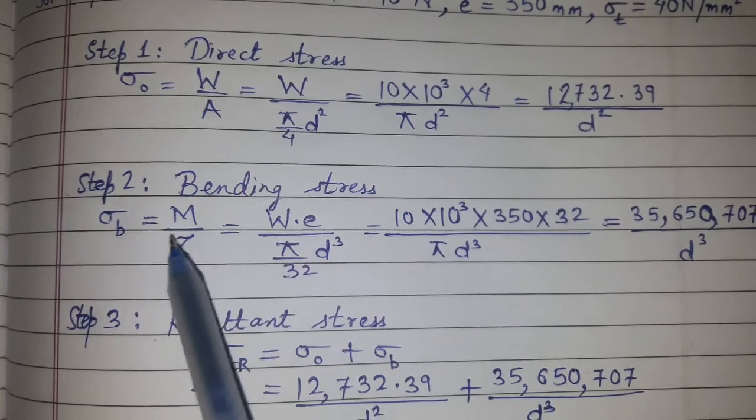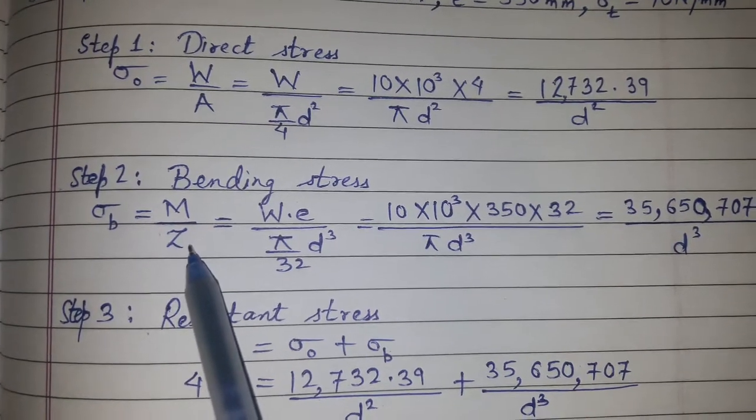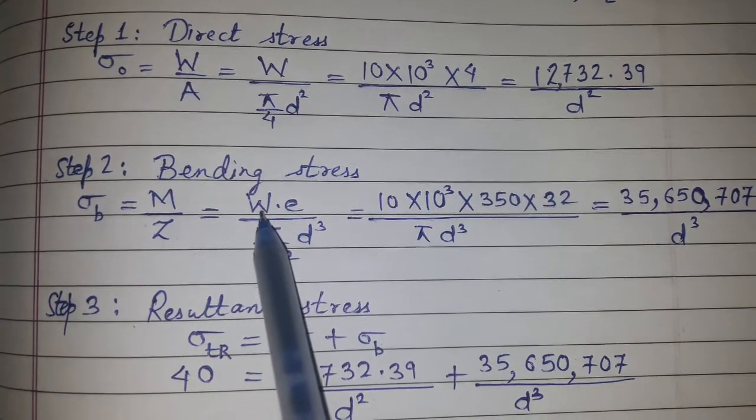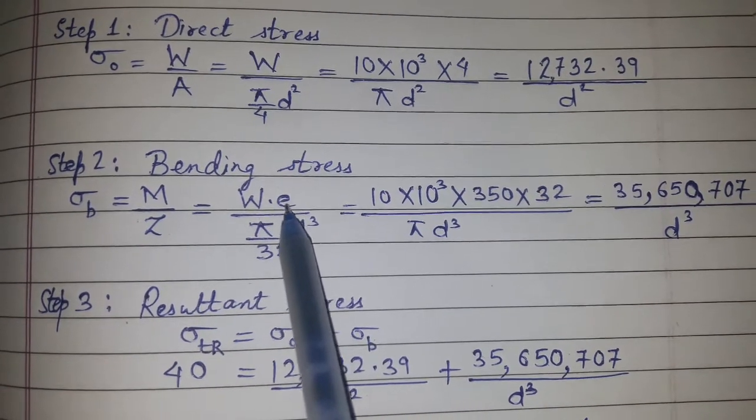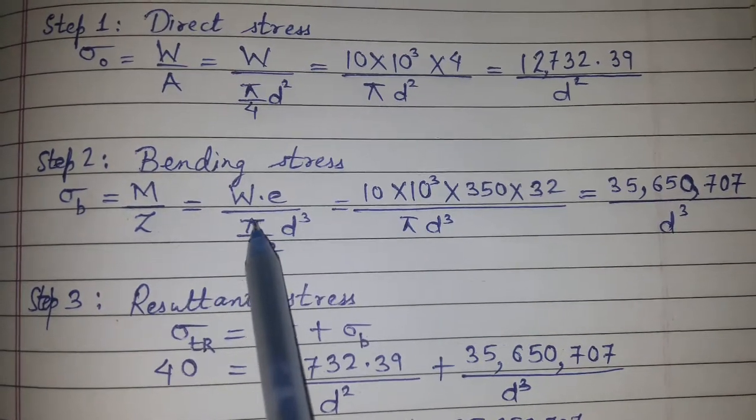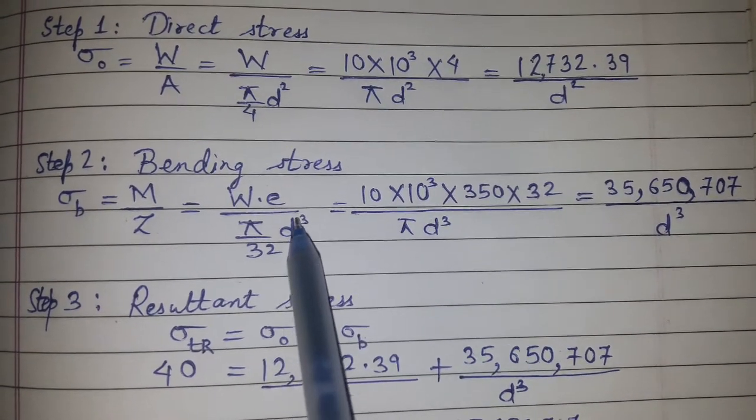Step 2: Bending stress. σ_b = M/Z, where M = W × e (load times eccentricity), and Z = π/32 × d³ for a circular section.